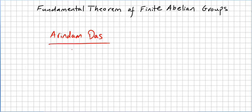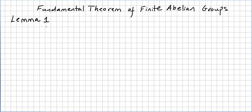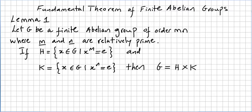This video is a request from my friend Arindam Das. During the course on abstract algebra or group theory, I did not give a proof for the fundamental theorem of finite abelian groups because it's a bit long. Since Arindam Das needs it, I'm going to provide a proof, divided into two or three videos. I'm going to follow the structure of the proof in the book by Gallian and break the proof into three or four lemmas. We start with lemma number one.